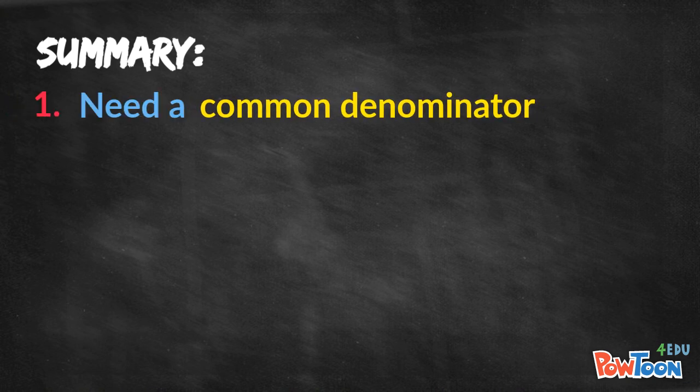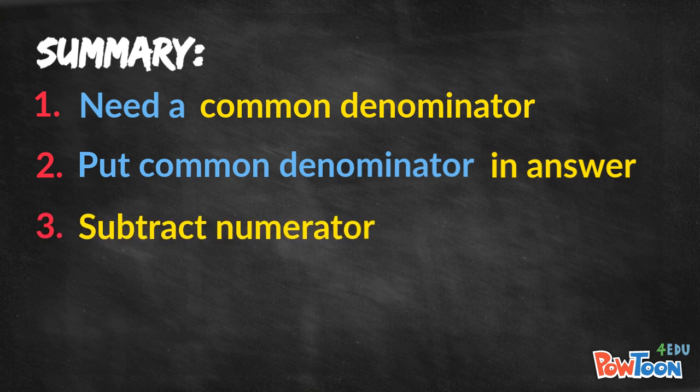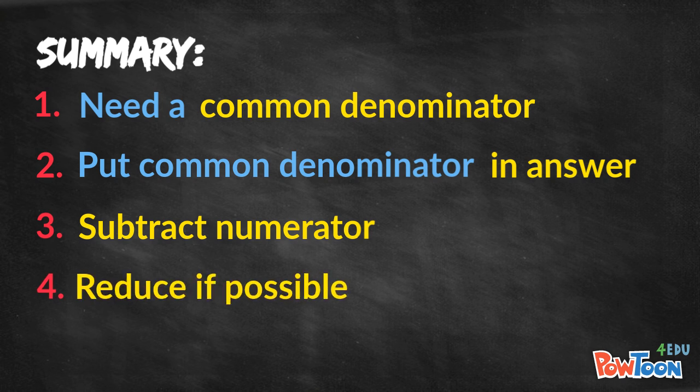Let's summarize fraction subtraction. First, you need a common denominator. So make equivalent fractions as necessary. Next, put that common denominator in the answer straight away. Then, subtract the numerator. Last of all, reduce your fraction if possible for the final answer.